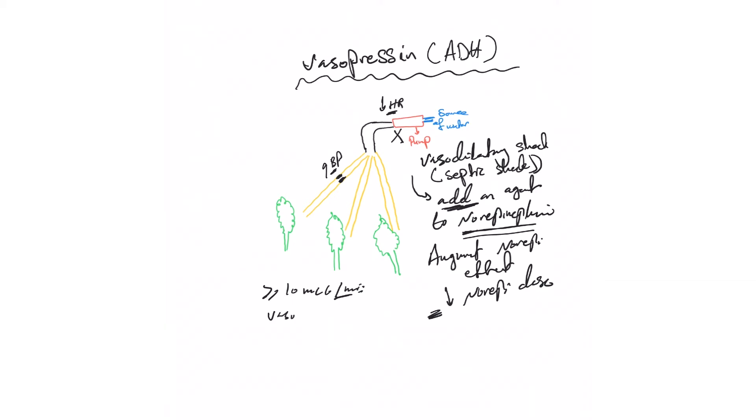Vasopressin for septic shock dose is usually fixed at 0.04 units. It's the only vasopressor that we use units instead of mcg per minute. Some hospitals use 0.03, some titrate up and down starting at 0.01, but usually for septic shock we start at 0.04 and I tell them leave it as is, don't touch it.